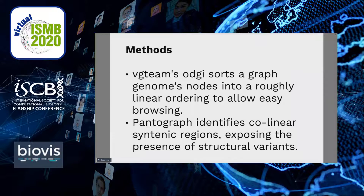Pantograph achieves scalability by implementing a multi-stage data analysis pipeline written in C++, Python, and JavaScript, and leveraging several technologies. The graph genome's nodes are sorted into a roughly linear order using VG Team's ODG tool. Graph sorting imposes a single linear coordinate system on the whole graph by determining an order to list its nodes. This is necessary to allow easy browsability of the graph genome itself.